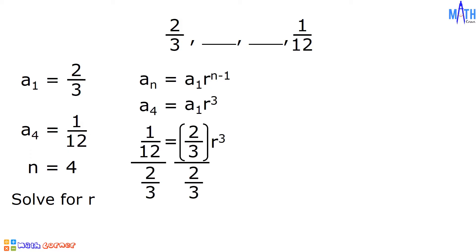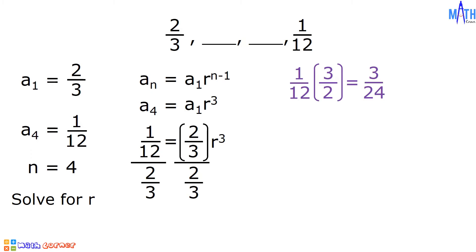On the left side, 1/12 divided by 2/3 is equal to 1/12 times 3/2. We will multiply the numerator by the reciprocal of the denominator. 1 times 3 is equal to 3, and 12 times 2 is equal to 24. Let us simplify 3/24 by dividing the numerator and the denominator by 3. 3 divided by 3 is equal to 1, and 24 divided by 3 is equal to 8. Therefore, on the left side of the equation, we have 1/8.